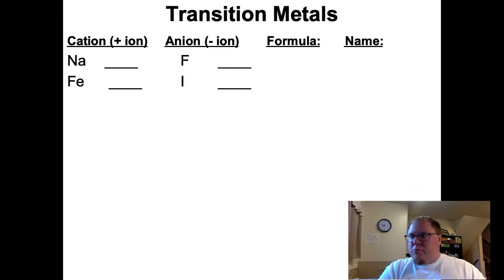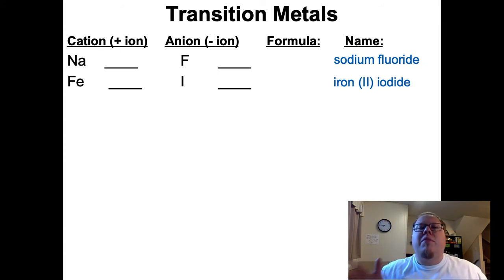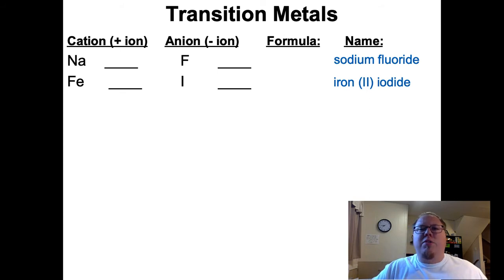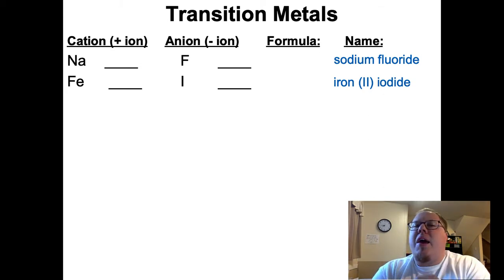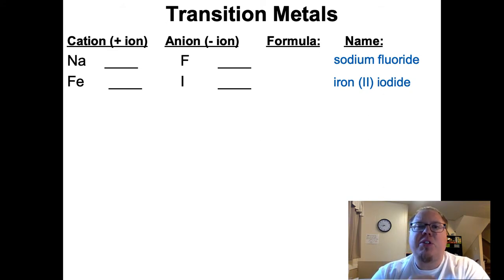Let me show you two examples. The first one would be called sodium fluoride - just like we did before, because we know the charge on sodium. It's part of the alkaline metals family, so we name it sodium, and then fluorine becomes fluoride, changing the ending to -ide. Now with iron, though, iron is a transition metal, so its name has a charge included with it. It's the Roman numeral 2 (II). Then we have iodine, so iodide. Iron 2 iodide is what we would name this, and the 2 represents the charge on the iron.